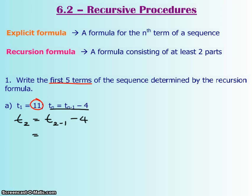So the second term is equal to term 2 minus 1, which is just 1, and then minus 4. Well, I know what t₁ is. The term value for t₁ is circled in red, and that's your 11.